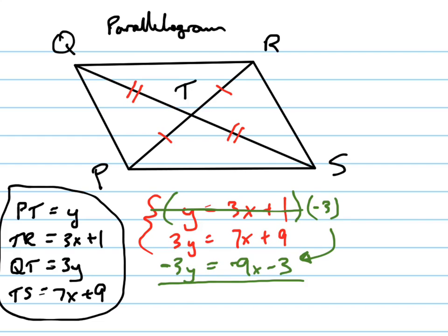When I add those straight down, I get 0y equals negative 2x plus 6, which means I have an equation just in terms of x now. Solve this for x, subtract 6 from both sides, that's negative 6 equals negative 2x. Divide both sides by negative 2, x equals 3.